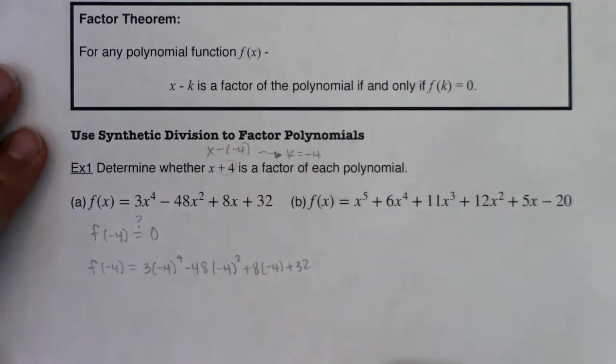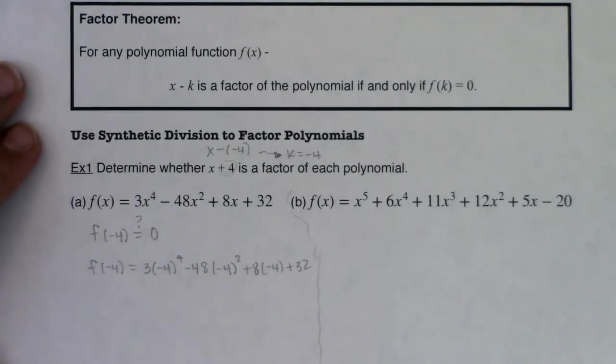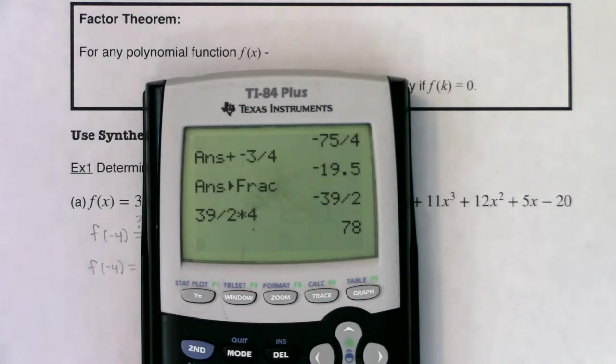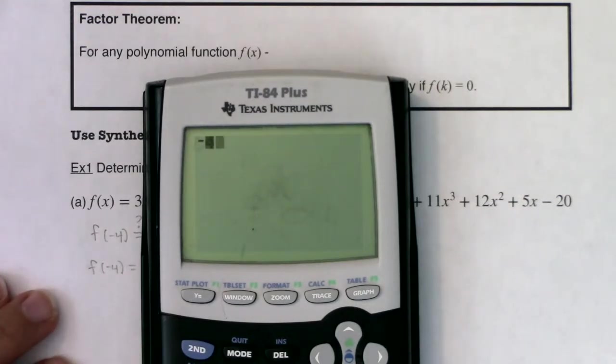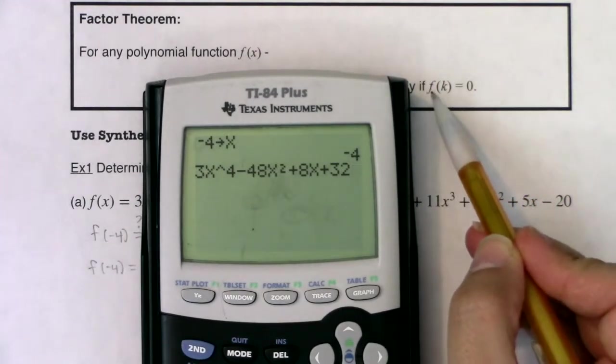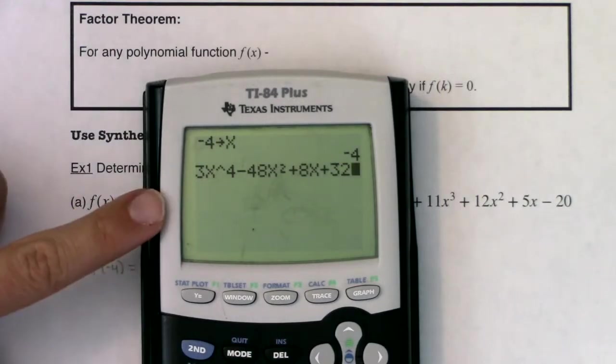And I'm going to even run into space here. Let me put a little separator. Now, I don't want to do this in my head. I would use my calculator to do this if I had a calculator. And then I'm going to show you how you can do this using synthetic division. I want to show you how synthetic division is so much more useful than just dividing polynomials like we saw in the last section. Alright, let me clear this out. I'm going to store negative 4 into my x and then plug in my function. 3x to the fourth minus 48x squared plus 8x plus 32. And what I'm hoping happens here is I'm hoping a zero pops out. If f of negative 4 is equal to zero, then from the factor theorem, I know x plus 4 is a factor. So let's see what we get here. Zero.